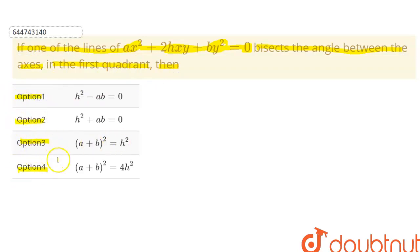We are given four options. Now, the equation is ax² + 2hxy + by² = 0. This is nothing but a general equation of pair of straight lines which passes through origin. How can we say passes through origin? Because this equation satisfies (0,0).